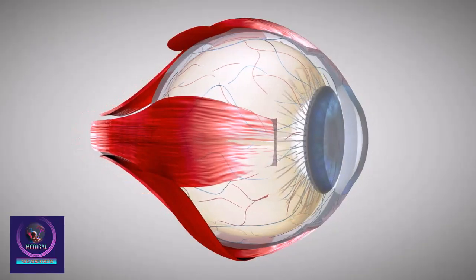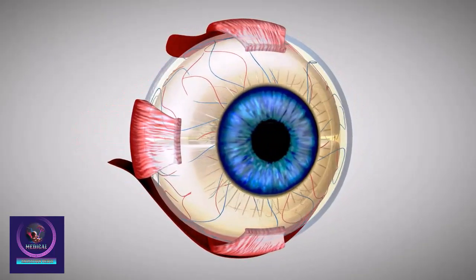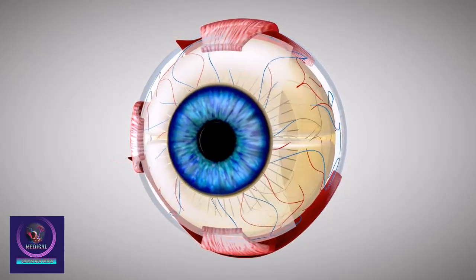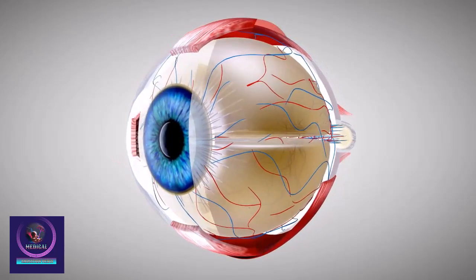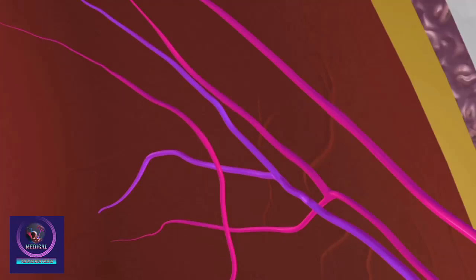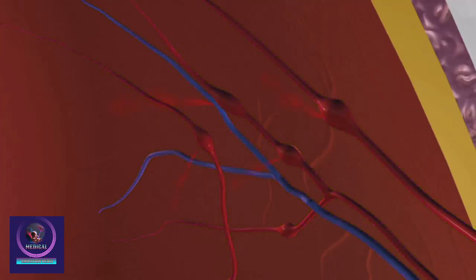Diabetes can cause damage to the small blood vessels in your eyes. This can happen in the retina, the film at the back of the eye that helps you see. The blood vessels in the retina may swell like tiny balloons. Blood can leak through the weakened blood vessel walls.